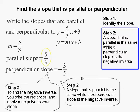And this completes our problem. Our parallel slope is 5 over 3. And the perpendicular slope is negative 3 over 5.